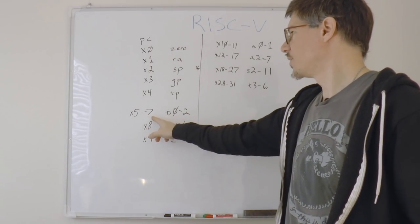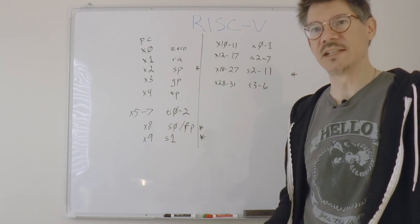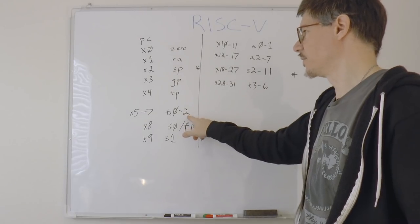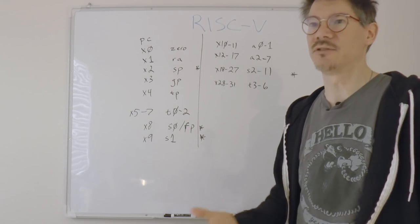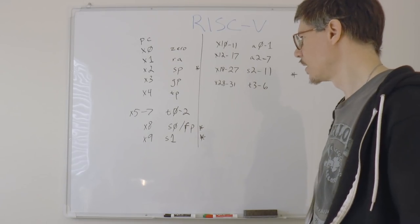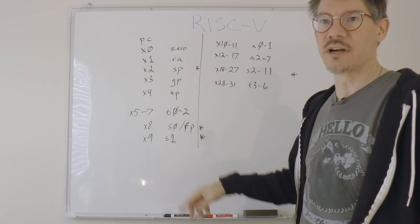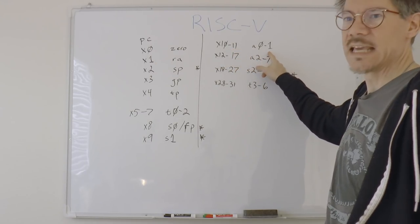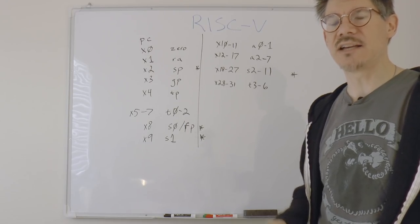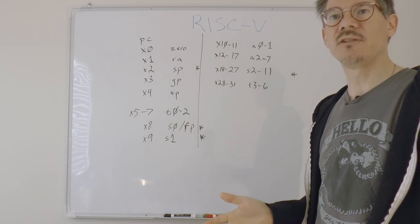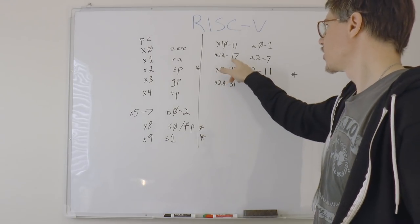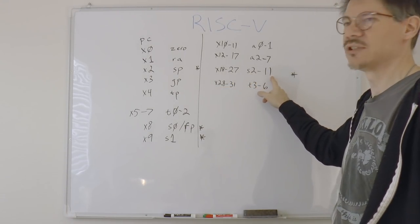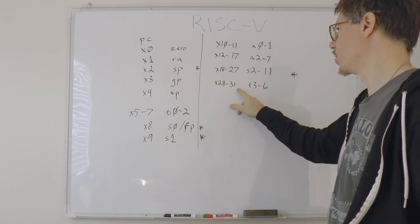Now, X5 through 7 are temporaries 0 through 2, so any subroutine can use them for anything they want. And the caller can't make any assumptions about what the values of T0 through T2 are going to be after a subroutine returns. So X8 is a saved register or a frame pointer, and X9 is another saved register. X10 through X11 are A0 through A1. Now these are arguments that get passed from one subroutine to another, and return values that get passed back. X12 through 17 are arguments 2 through 7. X18 through 27 are also a bunch of saved registers, and X28 through 31 are temporaries.